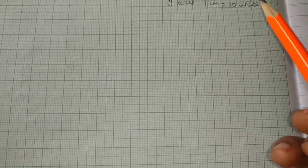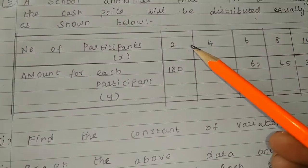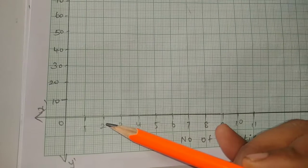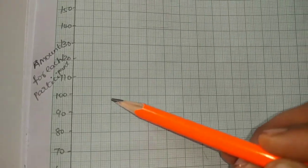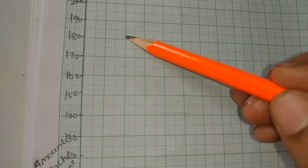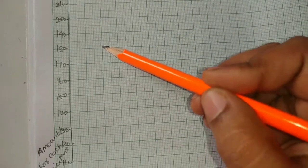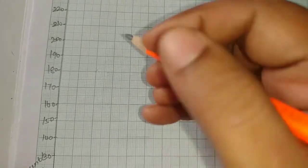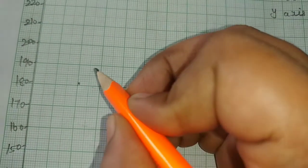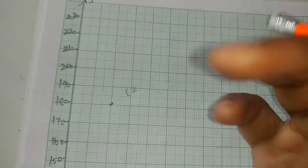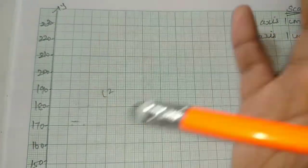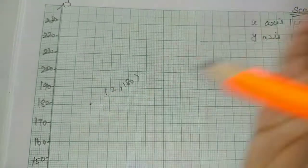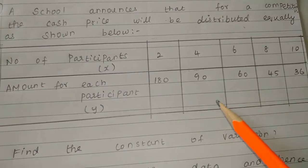Let's take the first point: X = 2, Y = 180. So X is 2 and Y is 180. We go straight up to 180 and mark the point at (2, 180).